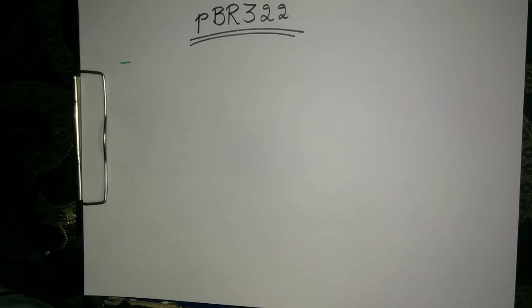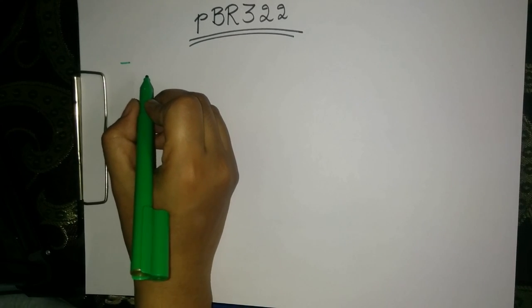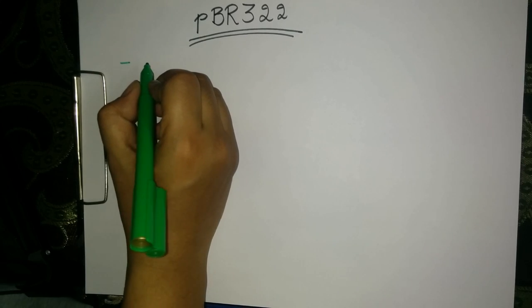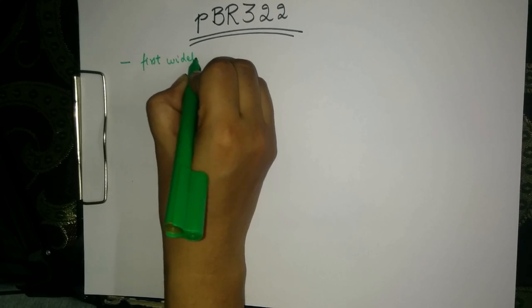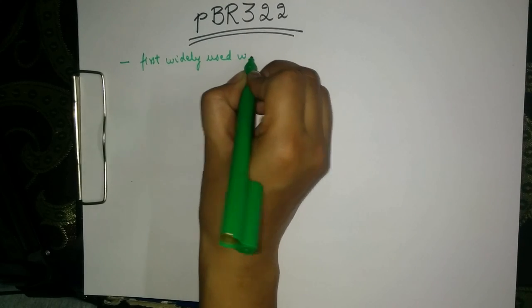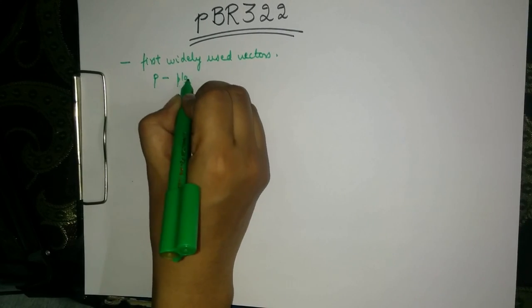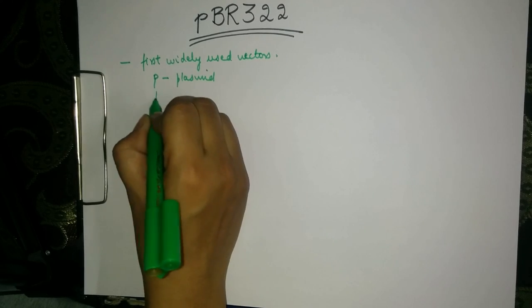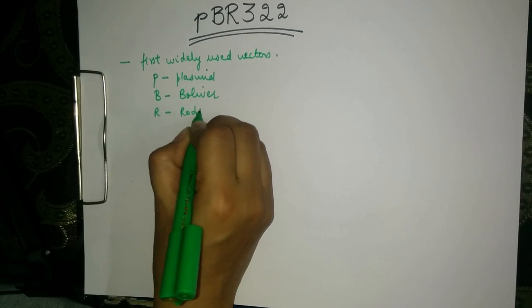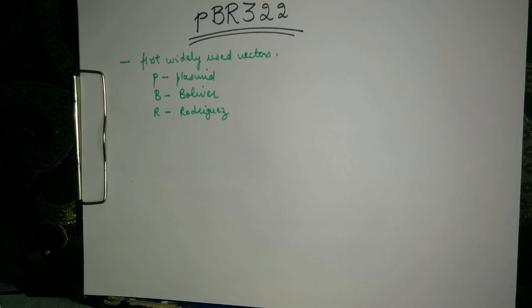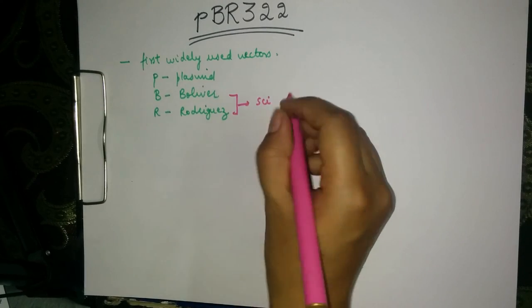In this tutorial we are going to learn about PBR322. PBR322 is a plasmid and it was one of the first widely used vectors for cloning in E. coli. Here P stands for plasmid, B stands for Bolivar, and R stands for Rodricks. Bolivar and Rodricks were the scientists who constructed this plasmid.